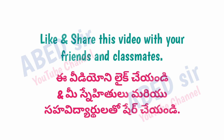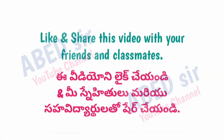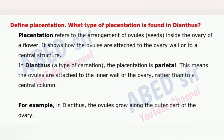Next important question: Define population and community. A population is a group of individuals of the same species living in the same area. For example, all the deer in a forest make up a population. A community is made up of different populations of various species living together in the same area. For example, in a forest, the community includes deer, trees, birds, and insects all interacting with each other.